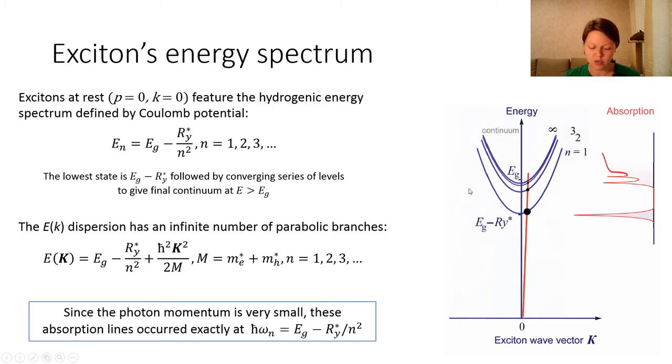On the band structure, the red curve represents the energetic dependence of the photon. As you remember, the photon momentum is very small, so this curve is almost a vertical line. Every time this red curve of the photon crosses these branches of excitons, energy and momentum conservation laws allow the photon absorption.